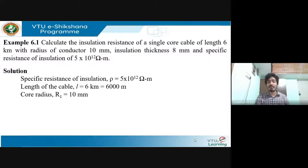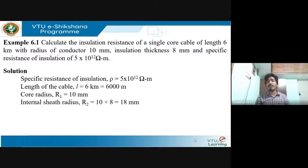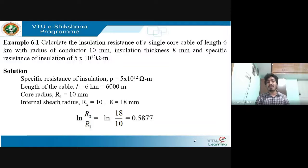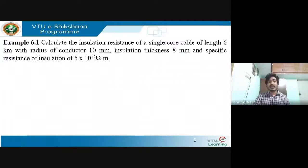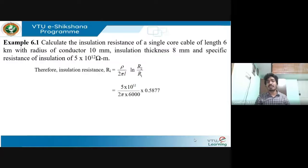Core radius r1 = 10 mm. The sheath radius r2 = r1 + insulation thickness = 10 + 8 = 18 mm. Therefore ln(r2/r1) = ln(18/10) = 0.5877. The insulation resistance expression is: Ri = ρ / (2πL × ln(r2/r1)). Substituting all values, the insulation resistance of the single core cable is approximately 77.94 mega-ohms.